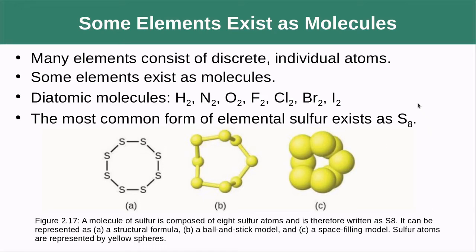Sometimes it's even more complicated. The most common form of sulfur is actually S8, where it forms a twisted ring structure.